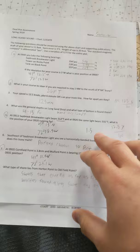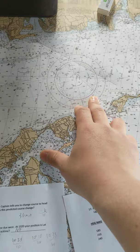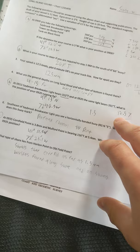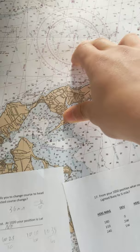For question number 5, for my running fix, I took a 312 bearing and then a 331 bearing, and using the DR line that I already had, I found that the distance I would have traveled along the DR line would have been 1.5 nautical miles.